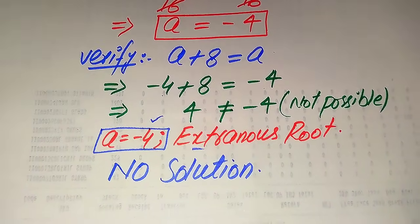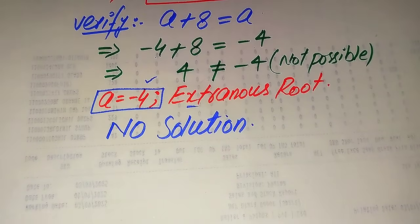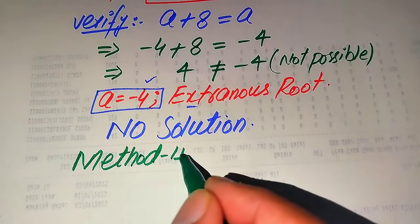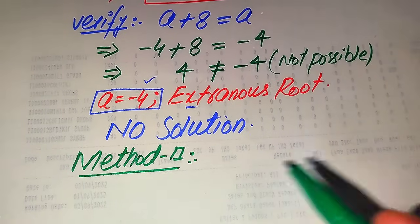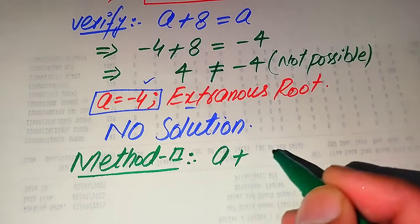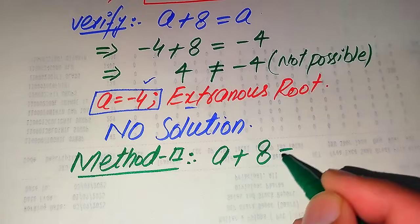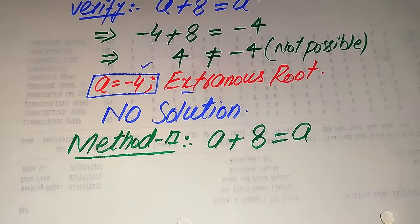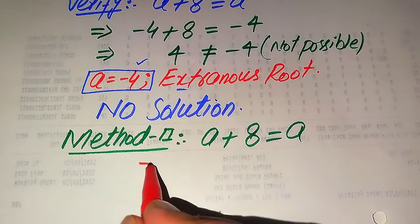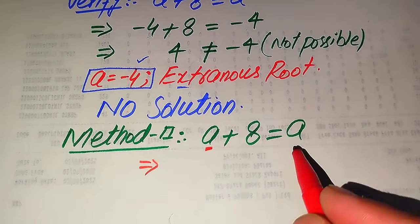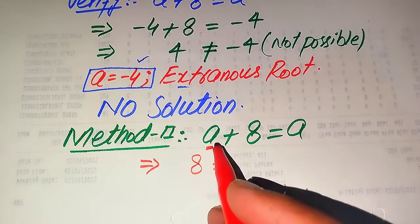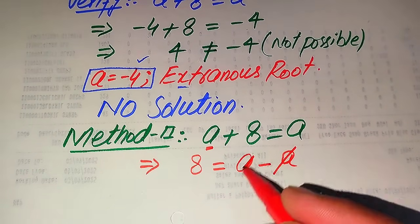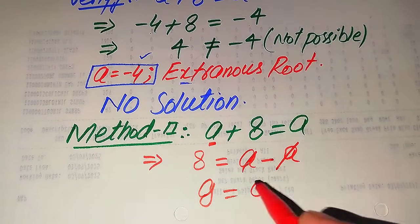Now we solve this problem using the second method, which is a straightforward method. The given equation is √(a + 8) = a. Moving a to the right hand side gives √(a + 8) − a = 0. You can directly see that when we move a to the right hand side, the positive a and negative a cancel, and we get 8 = 0.